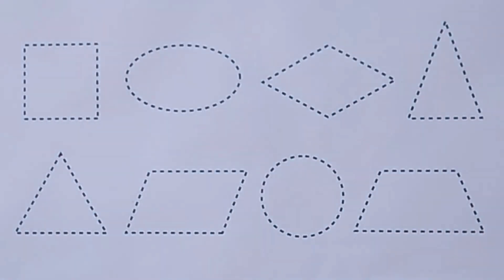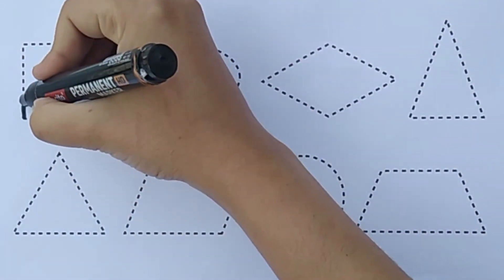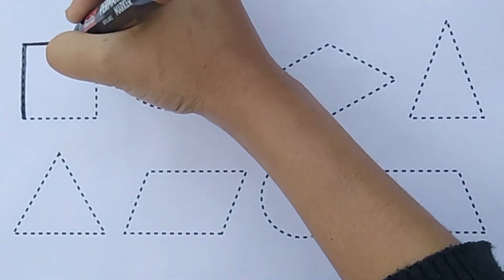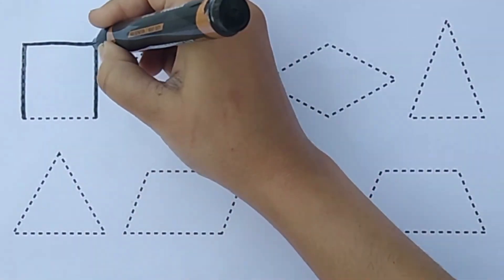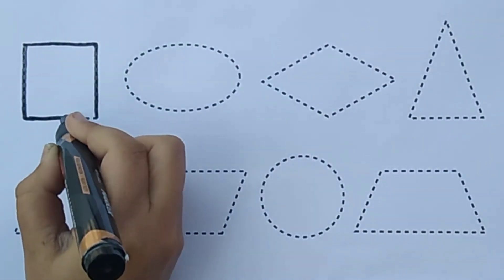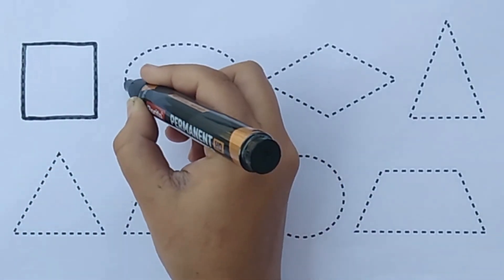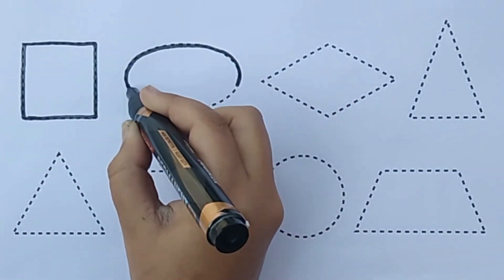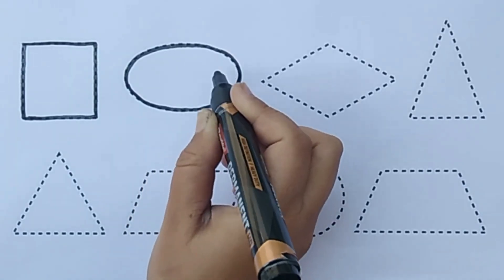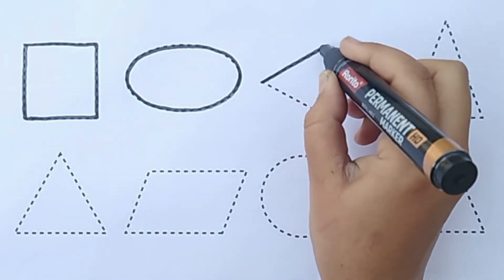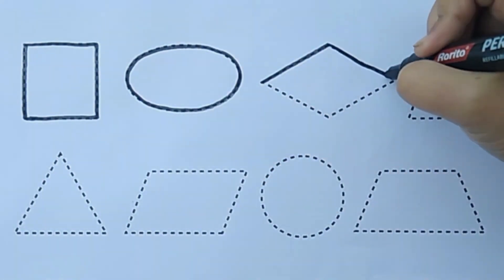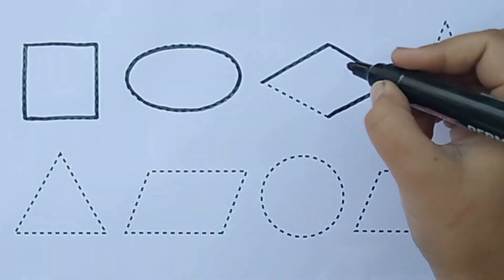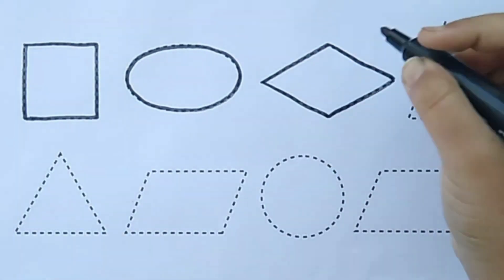Now, we'll learn to draw some shapes. Square. Oval. Diamond.